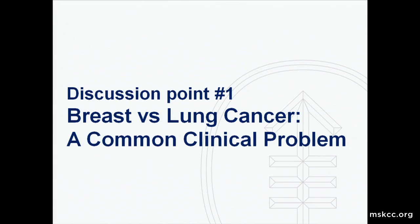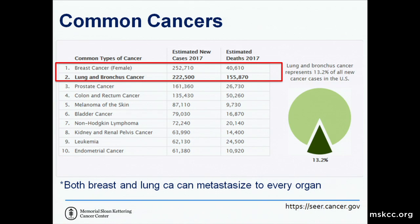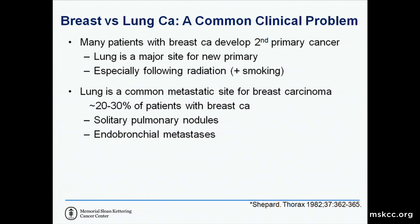Even though this is a horse and not a zebra, there are several practical learning points. The first is that breast versus lung cancer is a very common clinical problem. They are both very common tumors and both metastasize to every organ. Many patients with breast carcinoma develop a second primary cancer, and lung is a major site. There's increased risk for a second primary after radiation, especially in patients who smoke. Twenty to thirty percent of patients with breast carcinoma will develop lung metastases, and these can present as a solitary nodule or endobronchial metastasis, mimicking a primary lung carcinoma.